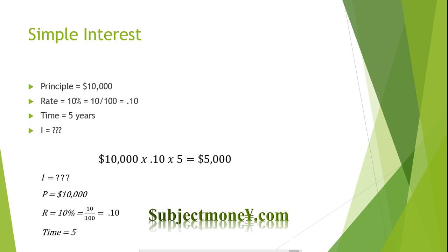Our formula would be $10,000 times 0.10 times 5. Therefore, the total amount of interest paid over a five-year period would be $5,000.